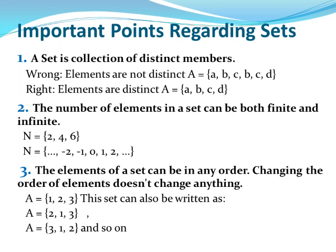Number two: The number of elements in a set can be both finite or infinite. Finite numbers are limited and infinite numbers are unlimited. Finite numbers example: N = {2, 4, 6}. Infinite numbers example: N = {..., -2, -1, 0, 1, 2, ...}. This means you don't know the start and end of this set.